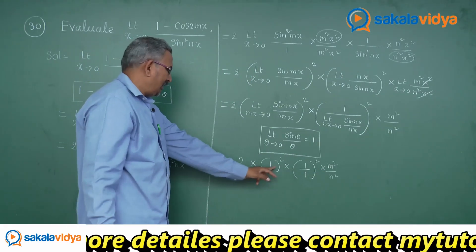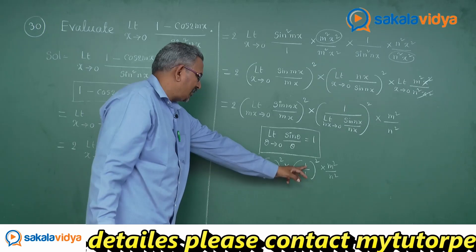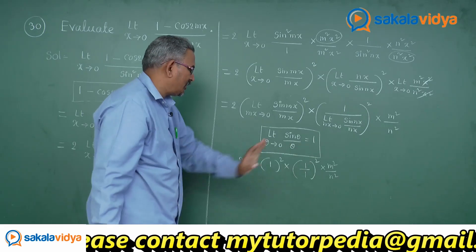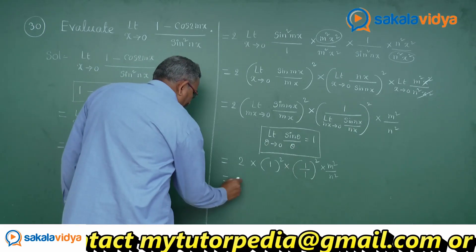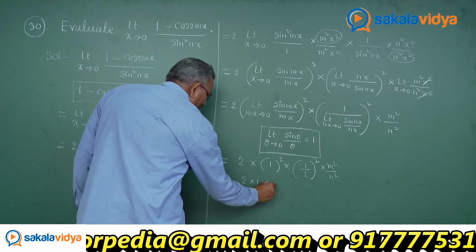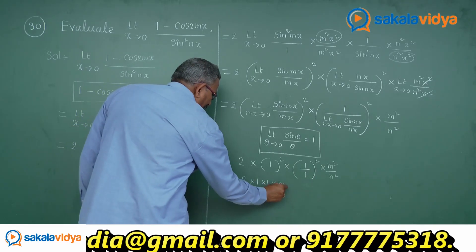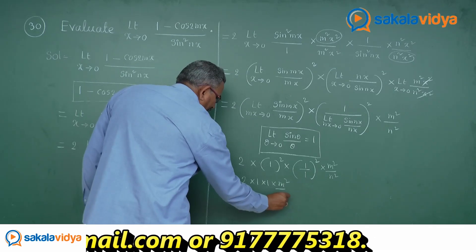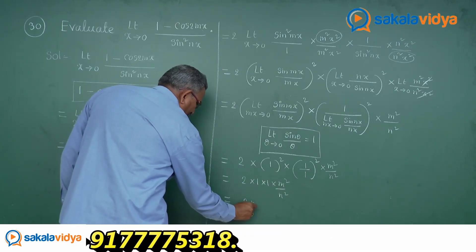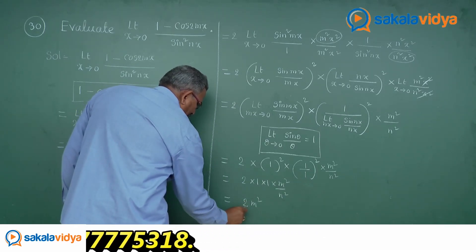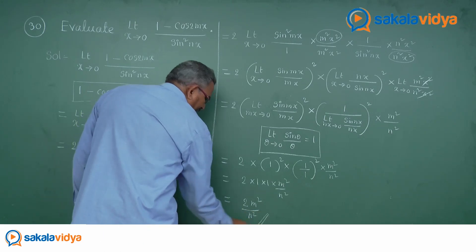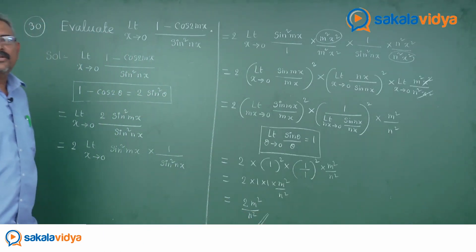So 1 square is 1, and 1 by 1 is also 1. So 2 times 1 into 1 into m square by n square equals 2m square by n square. So 2m square by n square is the required limit of the function.